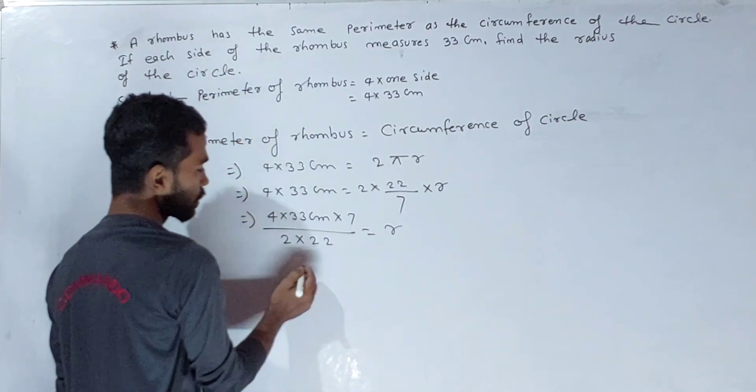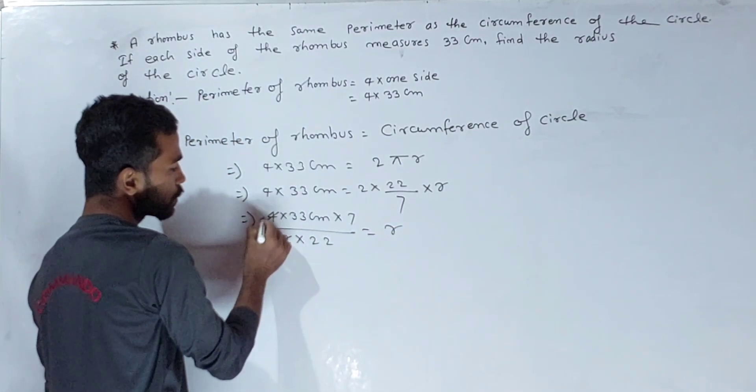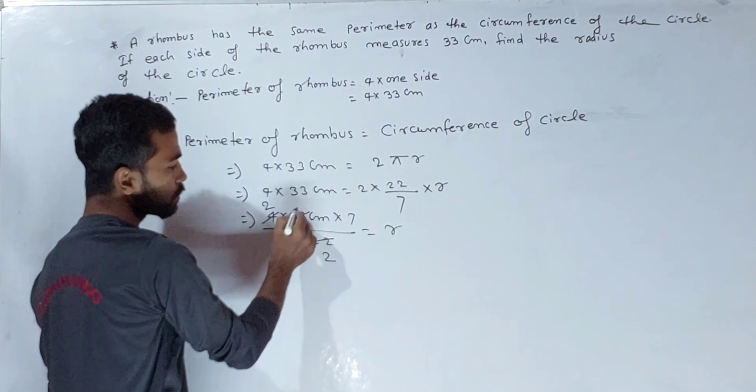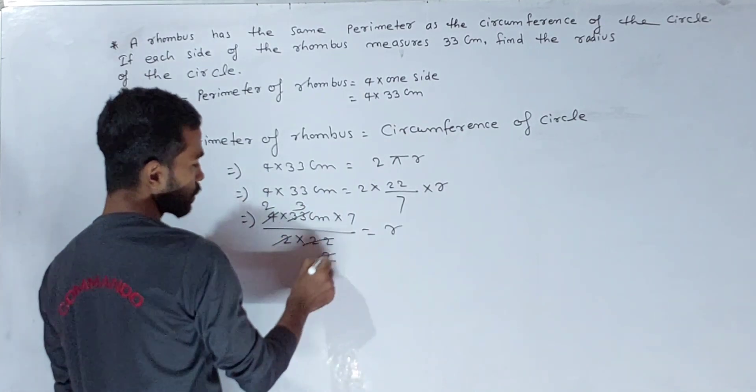r equals 21 centimeters. Therefore, the radius is 21 centimeters. Thank you.